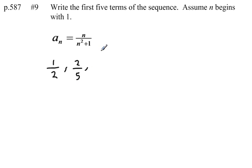To find our third term, we plug a 3 in place of n. So that'll give us 3 over 3 squared, which is 9, plus 1, is 10.